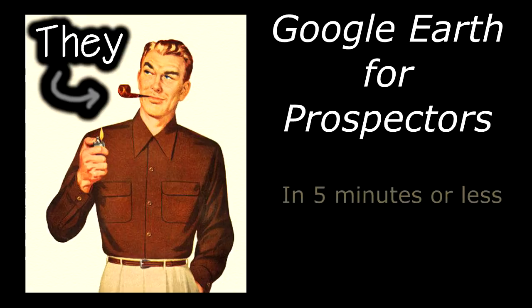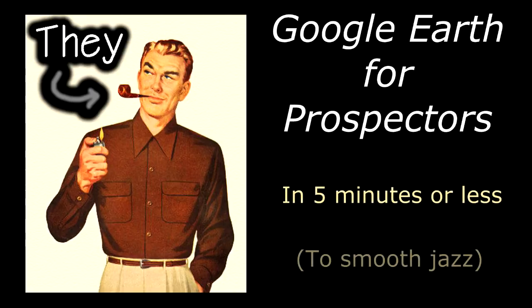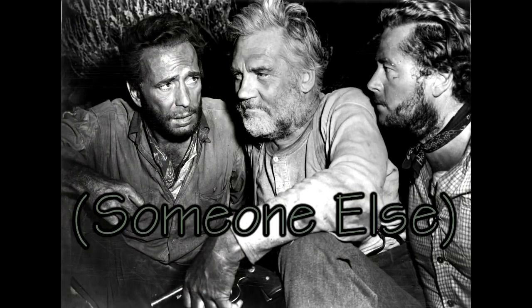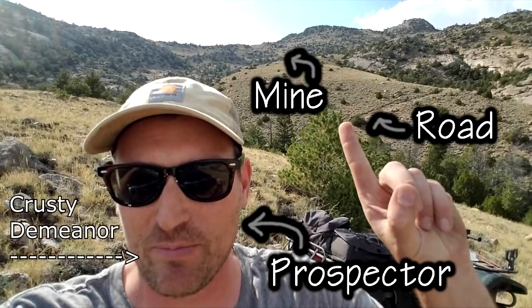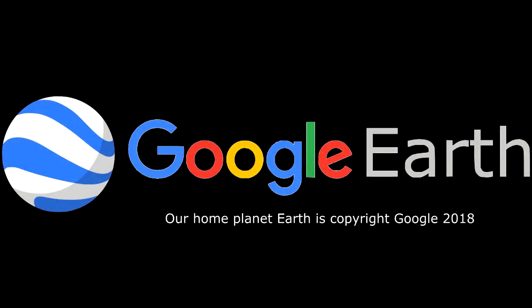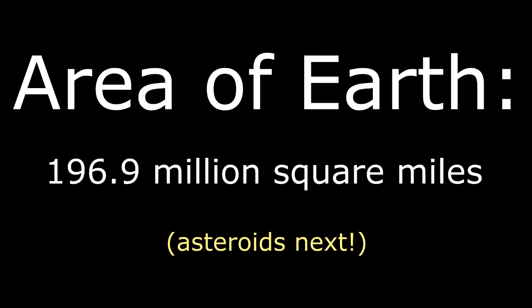They say gold is where you find it, but the only thing we can be absolutely certain about is that gold was where somebody else already found it before us. So when researching a new mineral, the first thing we want to do is look for the places it's been found before, and Google Earth is one of the best tools to do this with. But with millions of square miles to search, how do we know where to start?